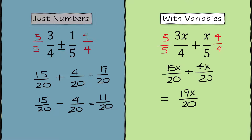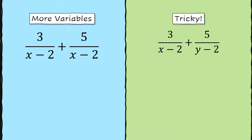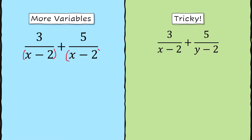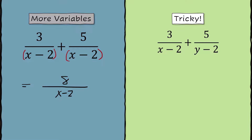Here's where it can get a little complicated — these are the kinds of problems that pop up in your algebra courses. In the first example, it's the same thing we just did with numbers, except the denominator isn't a number, it's an expression like x minus 2. Those two fractions share the denominator x minus 2, so you just add the numerators and get 8 over x minus 2. The next one is trickier — one denominator is x minus 2 and the other is y minus 2. The concept of how you start is exactly the same: you're trying to make a common denominator, and the fastest way is to multiply each denominator by the other.